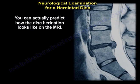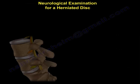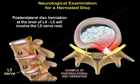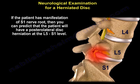You can actually predict how the MRI will look. So if the patient has L5 nerve root irritation, we can say that if it is a posterolateral disc herniation, it will be at the level of L4-L5, and that will affect the L5 nerve root. If the patient has manifestation of S1 nerve root, then you can predict that the patient will have a posterolateral disc herniation at the L5-S1 level.